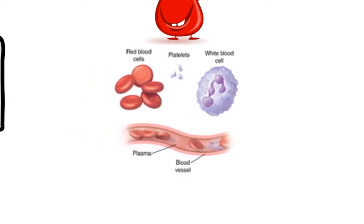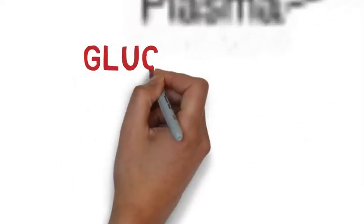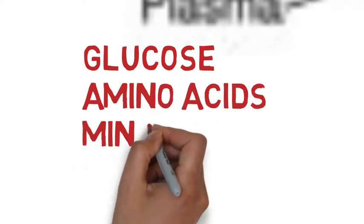In the blood there are several cells: red blood cells or erythrocytes, platelets, white blood cells, plasma, and blood vessels.